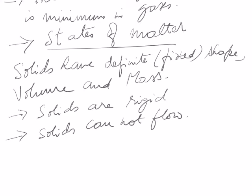Examples of solids are all around you. The wooden table — can it flow? No, because it is strong and rigid. So solids have fixed shape, fixed volume, and fixed mass, and they cannot flow.